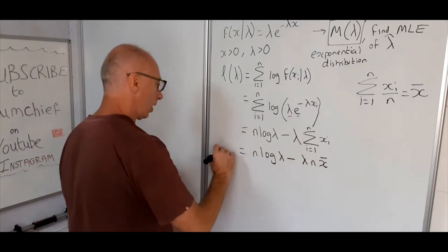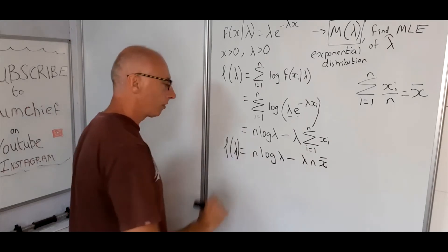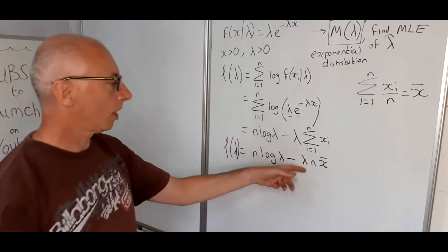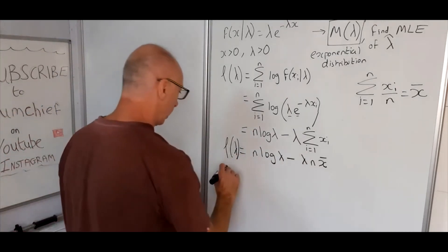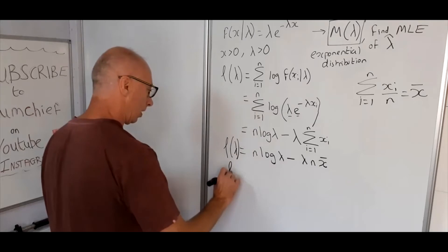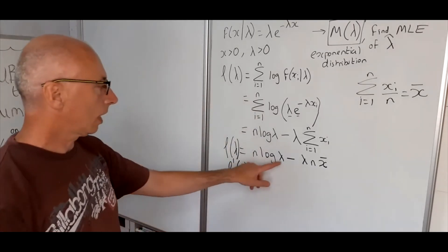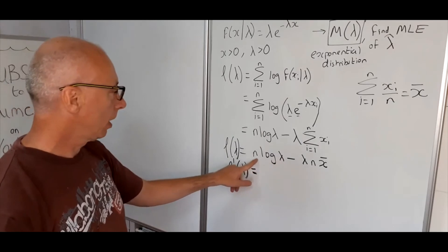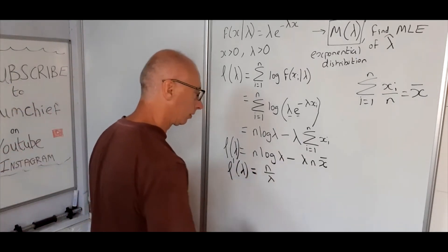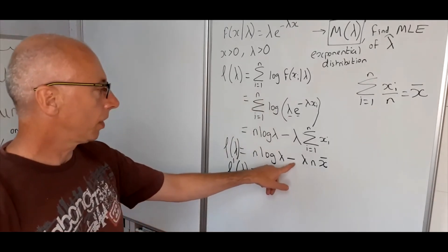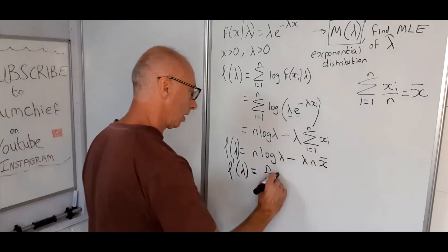Now we have the log-likelihood function. We take the first derivative with respect to lambda: the derivative of n * log(lambda) is n / lambda, and the derivative of -lambda * n * x̄ with respect to lambda is simply -n * x̄.